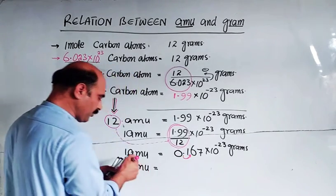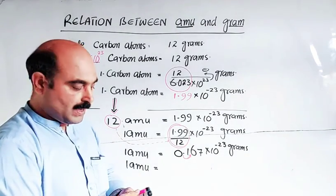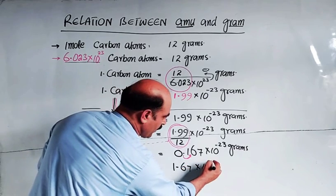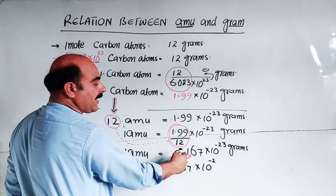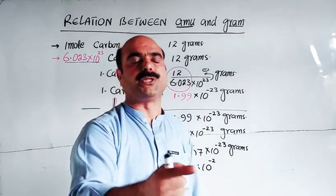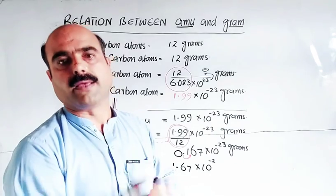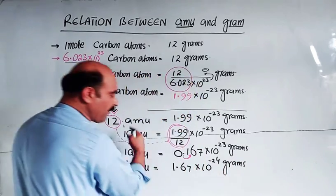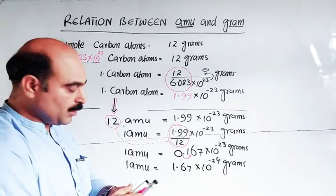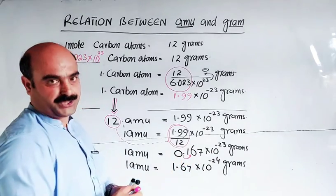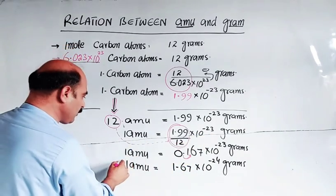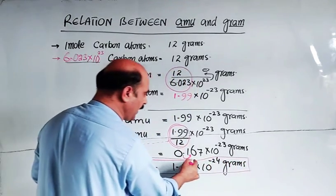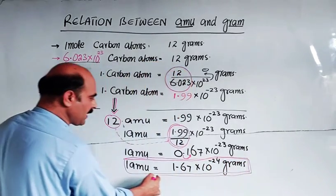So we can write that 1 amu is equal to 1.67 × 10^-24 grams. This is the relationship between amu and grams.